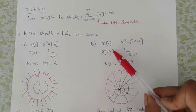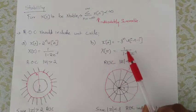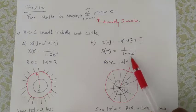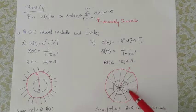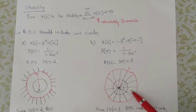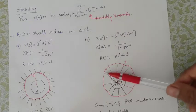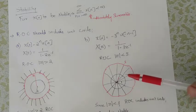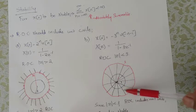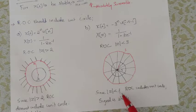Let's see the next example: x(n) is equal to -3^n u(-n-1). X(z) is equal to 1 divided by (1 minus 3z^{-1}). The ROC is |z| less than 3. The unit circle is at radius 1. Since ROC is |z| less than 3, the ROC includes the unit circle. Therefore, the signal is stable.